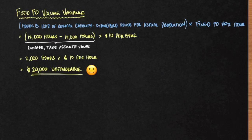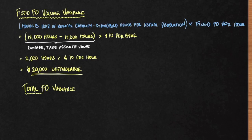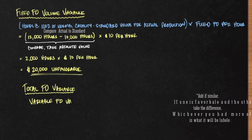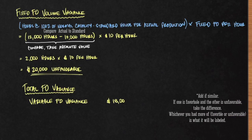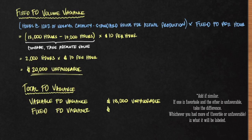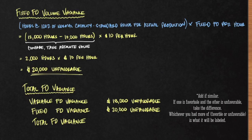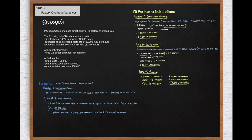Lastly, we total our factory overhead variance by combining the variable factory overhead controllable variance with the fixed factory overhead volume variance. Our variable factory overhead variance is $18,000 unfavorable and our fixed factory overhead variance is $20,000 unfavorable. Since both are unfavorable, we add them together to get a total factory overhead variance of $38,000 unfavorable. If one variance were favorable and the other unfavorable, you would take the difference, and whichever is larger determines the final result.